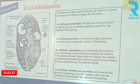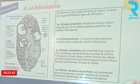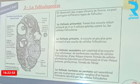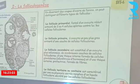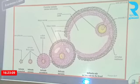La folliculogenèse. Voici une coupe effectuée au niveau de l'ovaire. On distingue des follicules primordiaux, primaires, secondaires, tertiaires, des follicules mûrs ou follicules de De Graaf. Par la suite, il va y avoir le phénomène de l'ovulation, soit l'expulsion à partir du follicule mûr d'un ovocyte bloqué en métaphase 2. Voici l'évolution des follicules primordiaux en follicules tertiaires.